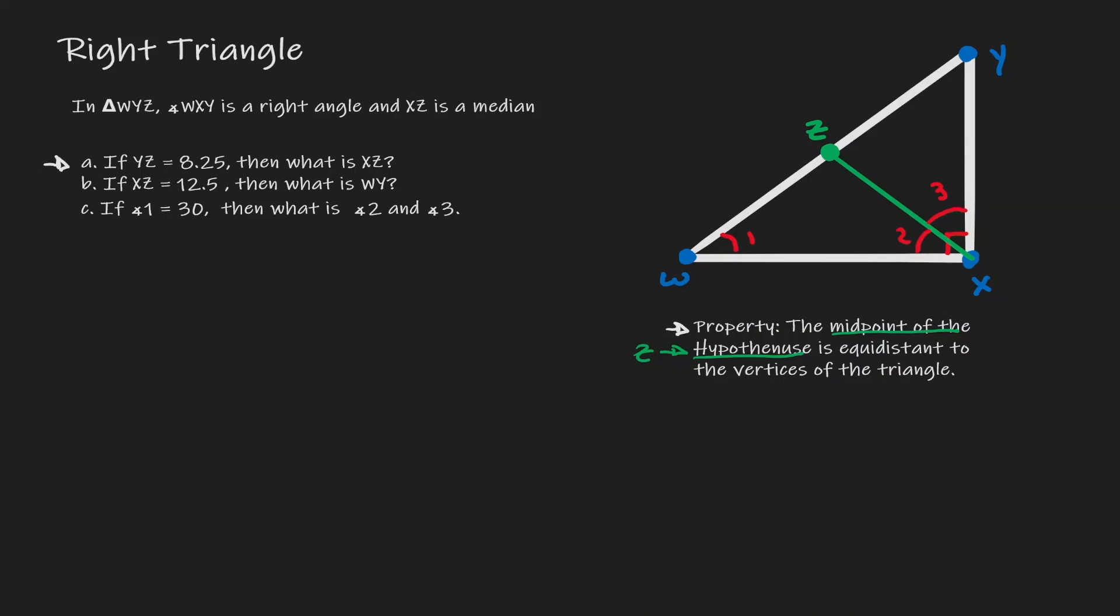Here we are given that YZ has a value of 8.25, which we can find here, and we want to find the value of XZ, which we can find here. If we concentrate on those two highlighted sections, we can see that the green line is the distance from the midpoint to the vertices, and the purple line is distance from the midpoint of the hypotenuse to the vertices as well.